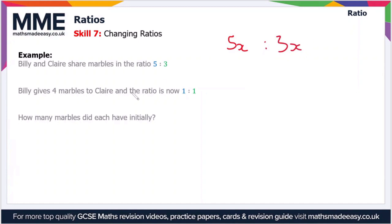So when Billy gives 4 marbles to Claire Billy now has 5x minus 4 and Claire now has 3x plus 4.